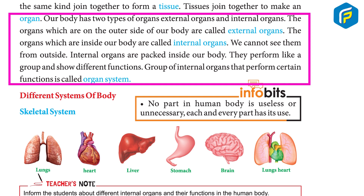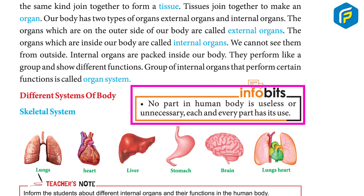Our body has two types of organs: external organs and internal organs. The organs on the outer side of our body are called external organs. The organs inside our body are called internal organs — we cannot see them from outside. A group of internal organs that perform certain functions is called an organ system.